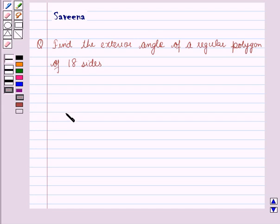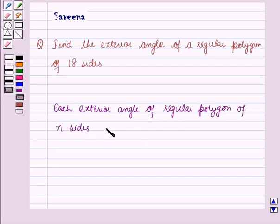And that is each exterior angle of regular polygon of n sides is equal to 4 over n right angles.